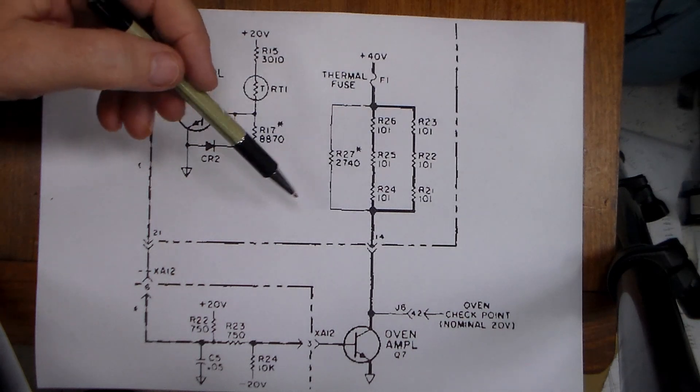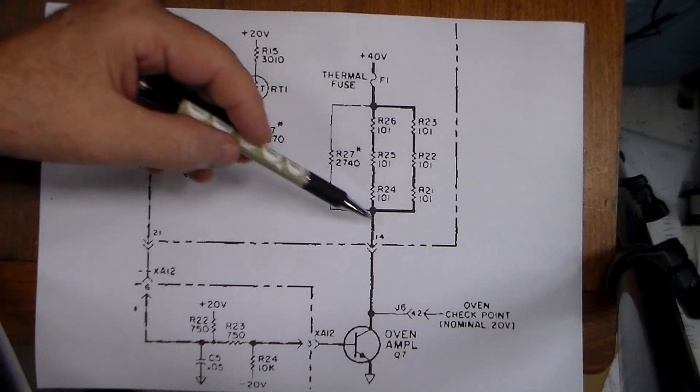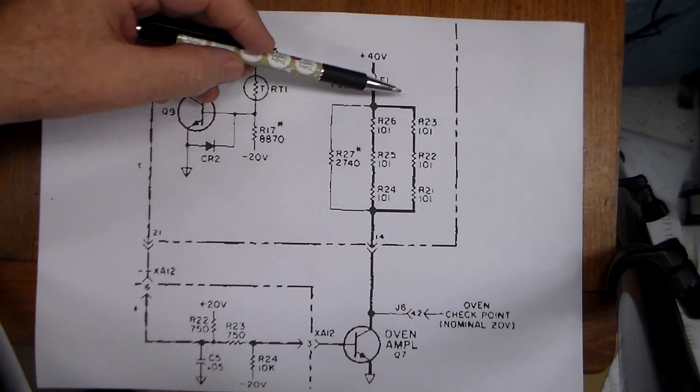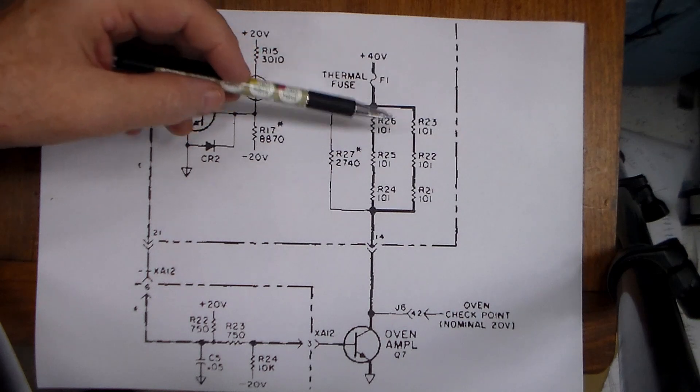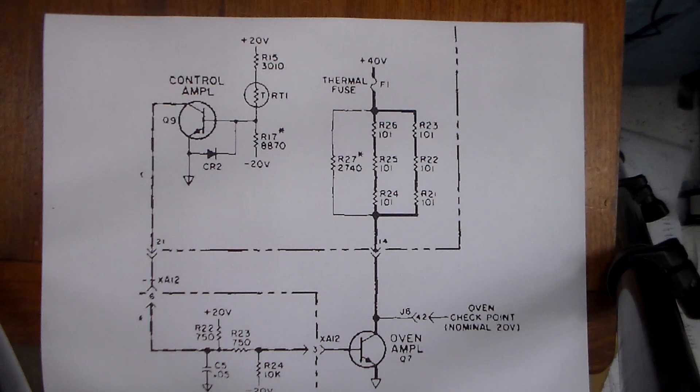This simple trick of changing from a simple on and off control to linear control close to the set point allows the circuit to give a finer control in the region close to the set point and therefore maintain the temperature more precisely.